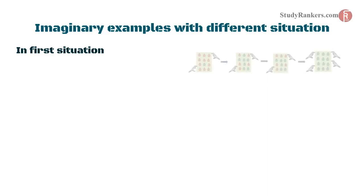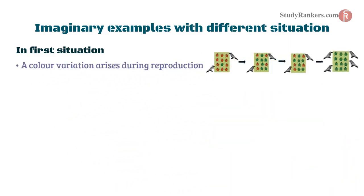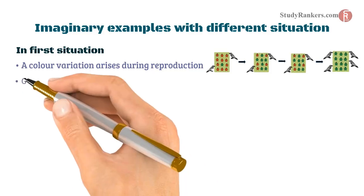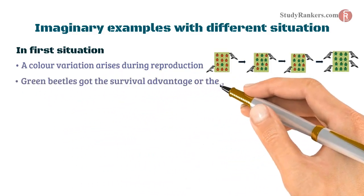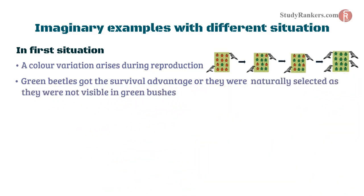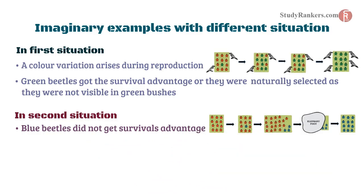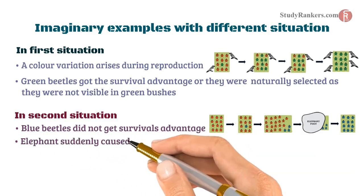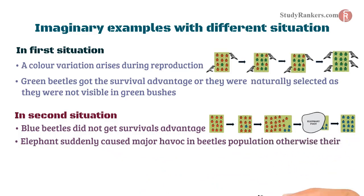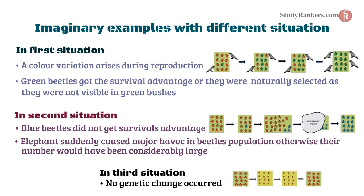In the first situation, a color variation arises during reproduction. It results in green beetles getting the survival advantage, or they were naturally selected, as they were not visible in green bushes. In a second situation, blue beetles did not get survival advantage. Elephants suddenly caused major havoc in the beetles population, otherwise their number would have been considerably large. In the third situation, no genetic change has occurred.